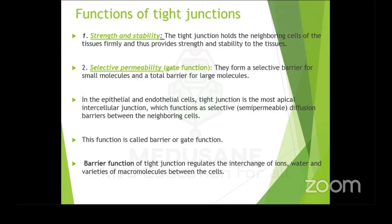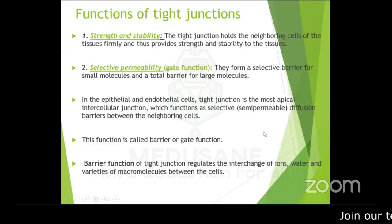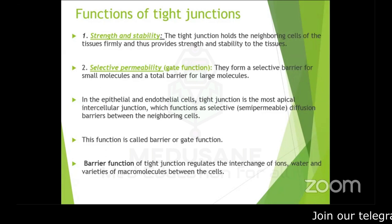Now for the functions of tight junction. The first and most important function is selective permeability — it only allows certain smaller molecules through and forms a total barrier for larger molecules. It acts as a semi-permeable diffusion barrier between neighboring cells, also called gate function or barrier function.